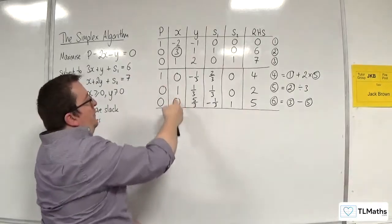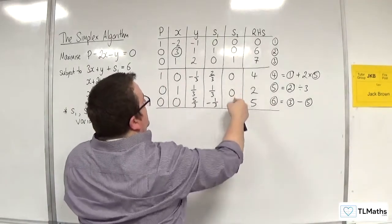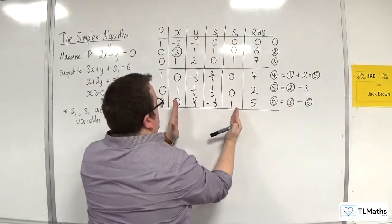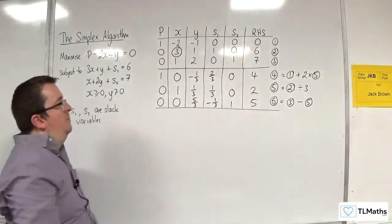So you can tell whether a variable is basic or not by the fact that you just have a single 1 and the rest are 0s in that column. So 1 and the rest are 0s. So at the moment X and S2 are basic, whereas Y and S1 are non-basic.